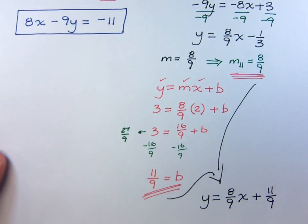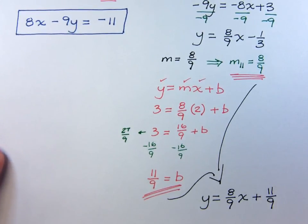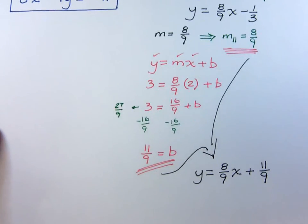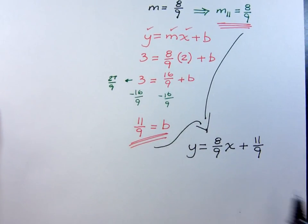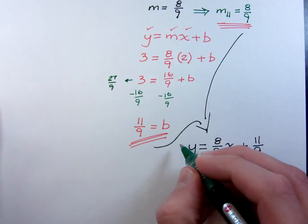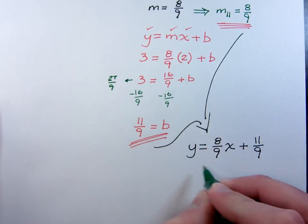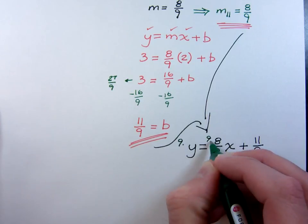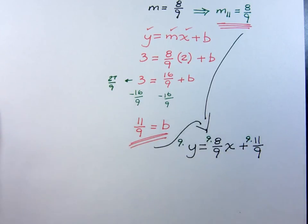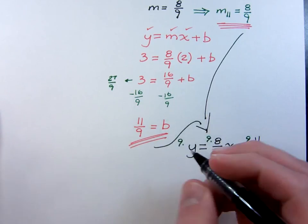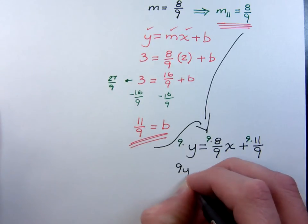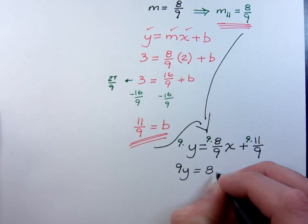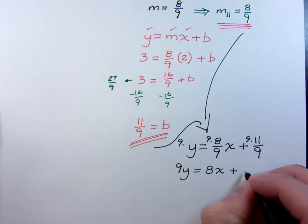Just so you know that I'm not messing with you, and that you will realize that these guys do represent the same line, let me take this guy right here and clear the fractions. To clear the fractions, we would just have to multiply everything times the least common denominator, which is 9. So, multiply all of these guys times 9. When I do that, I have 9y equals 8x plus 11.